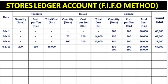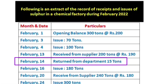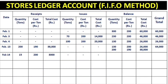On February 14, there is a return from the department of 15 tons. This is very important — a return from department is treated as a Receipt, not an issue. The cost is 200 rupees per ton (the original issue rate). So receipts: 15 tons at 200 rupees, total 3,000.